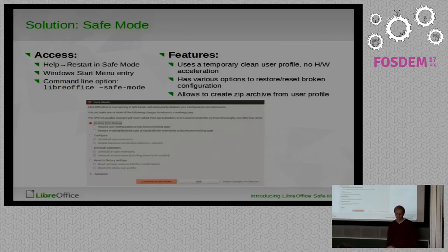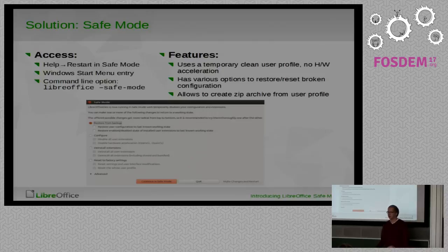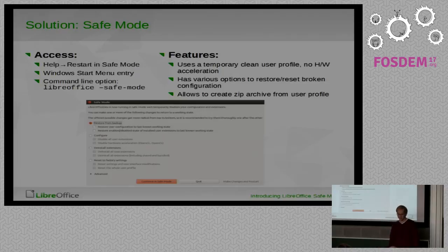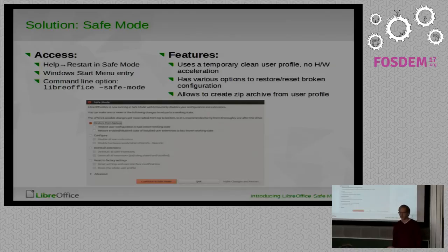What are the features? It uses a temporary clean user profile and also disables hardware acceleration like OpenGL and OpenCL temporarily, because some users experienced crashes due to OpenGL on startup, and when you can't start LibreOffice you cannot fix that only by manually editing configuration files. When you start it, you get a dialogue with options to restore and reset several things. It also allows creating a zip file from the user profile, which helps if you want to send it to someone or upload it to the bug tracker for developers to analyze.